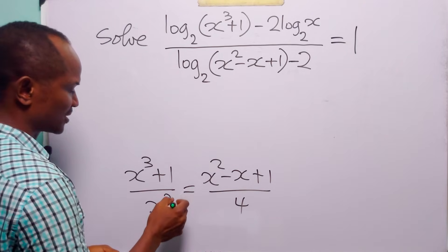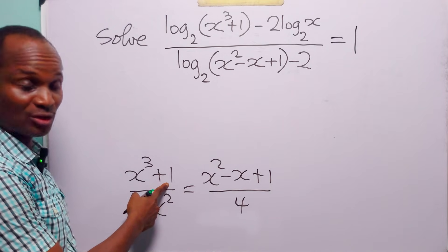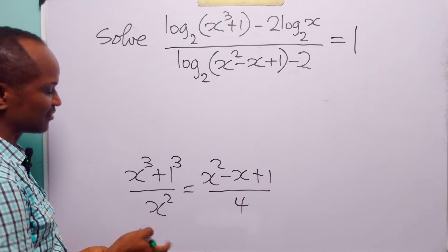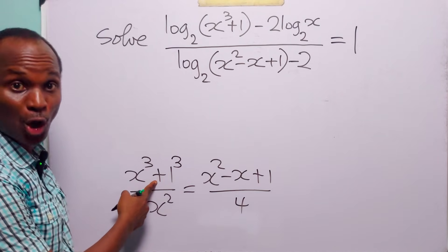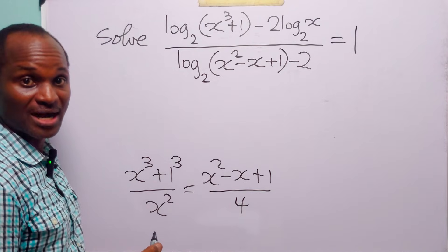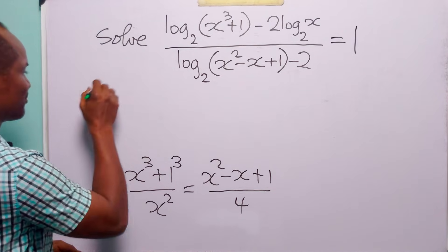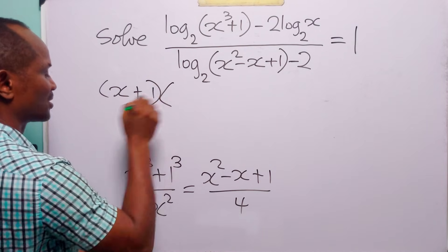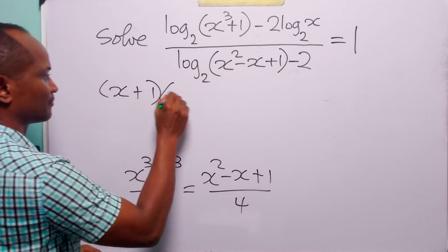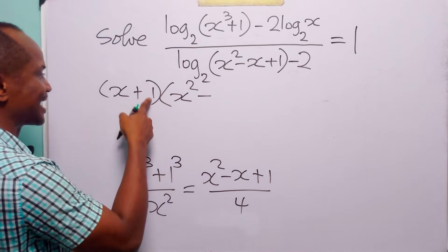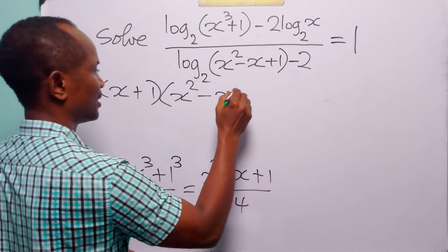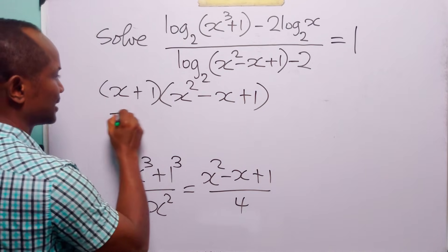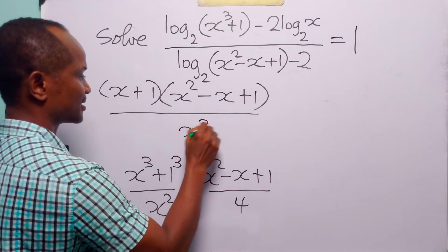Now before we cross multiply, notice that in this numerator we can write 1 as 1 cubed. When written in this form, you can see the sum of two cubes. We can factorize this as x plus 1 multiplied by x squared minus x times 1 plus 1 squared, which of course equals 1. In the denominator we still have x squared.